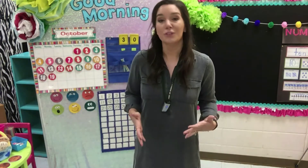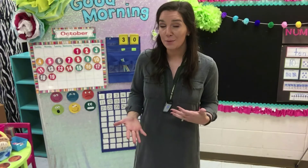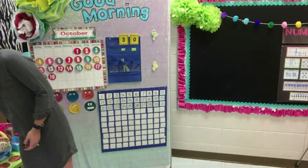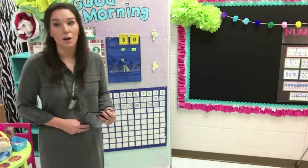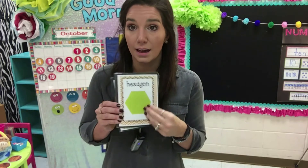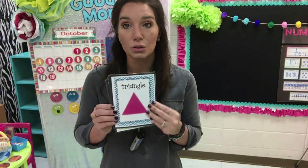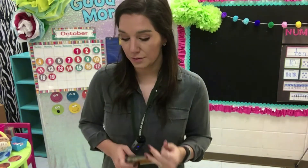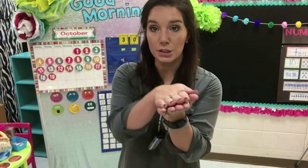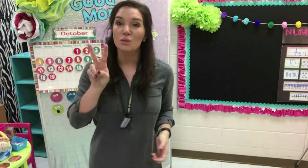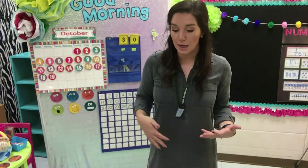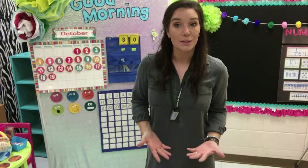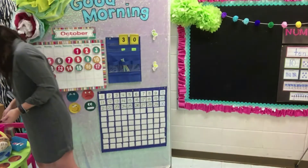Now let's do our shape of the day. But first, I want to flash the shapes we've been working on. What's this? Rectangle, hexagon — that one's kind of tricky — circle, triangle, square. All of these shapes are our flat shapes. Hold your hand flat — it looks flat like a pancake. We also call those 2D shapes. So we've got all of our flat shapes. Now it's time to learn about a different kind of shape.